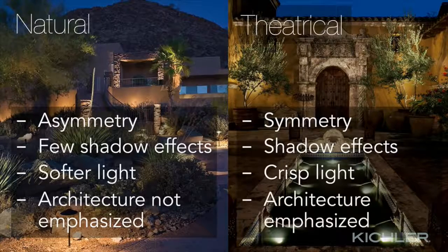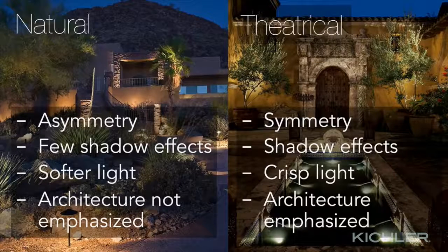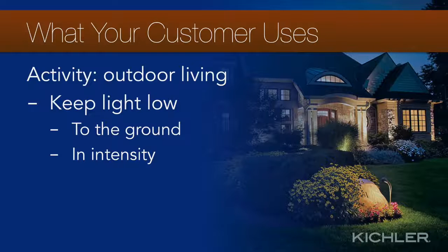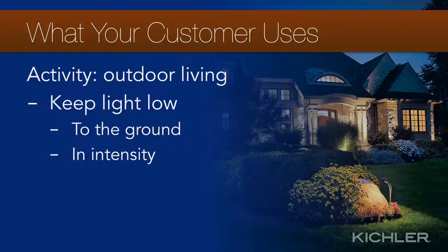Elements of a more theatrical look are quite the opposite: symmetry, lots of shadowing effects, crisp lighting, and an emphasis on unique architectural features. When making your initial design, pay attention to areas developed for outdoor use — outdoor kitchens, outdoor living areas, pools, basketball hoops, or putting greens. You can ask about these specifically during your client meeting and discuss the best way to light those areas. If they need a light for a barbecue or above a dining table, be sure to work that into the design.